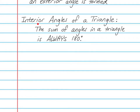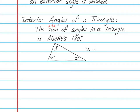The first concept has to do with interior angles of a triangle, and that says that the sum of the angles in a triangle is always 180 degrees. Sum means the answer to an addition problem. So that means if you add all of the interior angles of a triangle, it will always add to 180. In this triangle that I have drawn, I could say that x plus y plus z will equal 180 degrees.